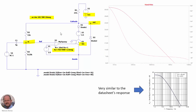Here we can see the schematic used in the simulation to obtain this response. We have adjusted the voltage source to 9.5 volts, so we are injecting into the cathode a DC current of 10 mA. On the right, we can see the gain corresponding to the output voltage over the input voltage, and the response is very similar to that from the datasheet.